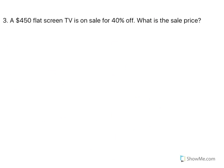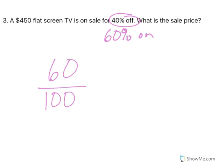Number three: a $450 flat screen TV is on sale for 40% off. Here's the thing — if it's 40% off, that means it's 60% on. So I'm going to have 60% over 100. This is the sale price, this is the regular price. You're not paying the 40% off; you're paying the 60% that's left.